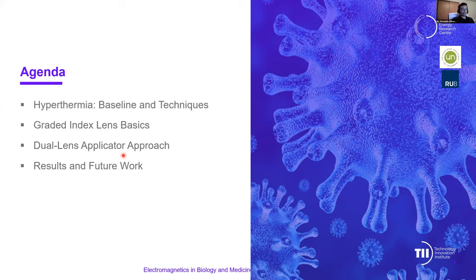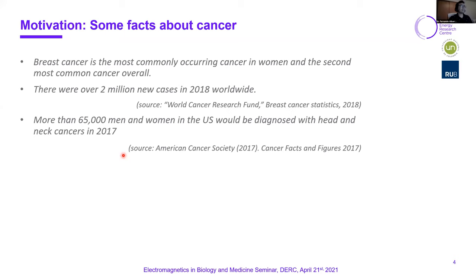Well, motivation, some facts about cancer. Breast cancer is the most commonly occurring cancer in women. Millions of people are diagnosed every year. I just put in here some numbers. Over 2 million were new cases worldwide in 2018. Thousands of new cases of cancer are diagnosed every year, not only these are just numbers from the US, but of course worldwide. So this is, I think, the motivation from the welfare point of view for this work.